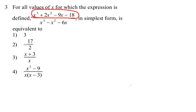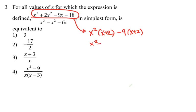Here we're trying to find the simplest form. We're going to factor the numerator first. We can factor out x squared. Then we get x plus 2 from the first two terms and negative 9 from the second two terms. We realize that x plus 2 is common, giving us x squared minus 9 and x plus 2.